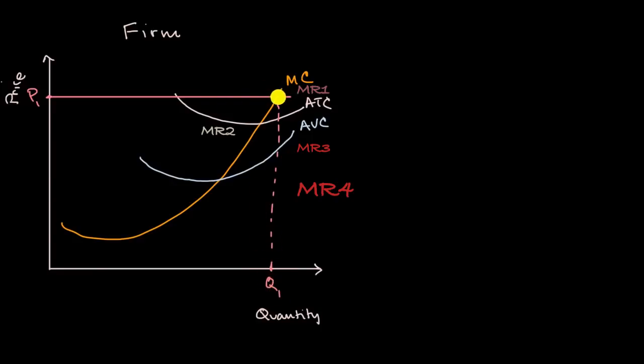And this is a good situation for the firm because the price that it's getting is higher than its average total cost. And so there is going to be a nice amount of profit for this firm. The profit is going to be the price minus the average total cost at that quantity times the actual quantity. So because P one is greater than the average total cost, we have a situation where the firm is profitable.